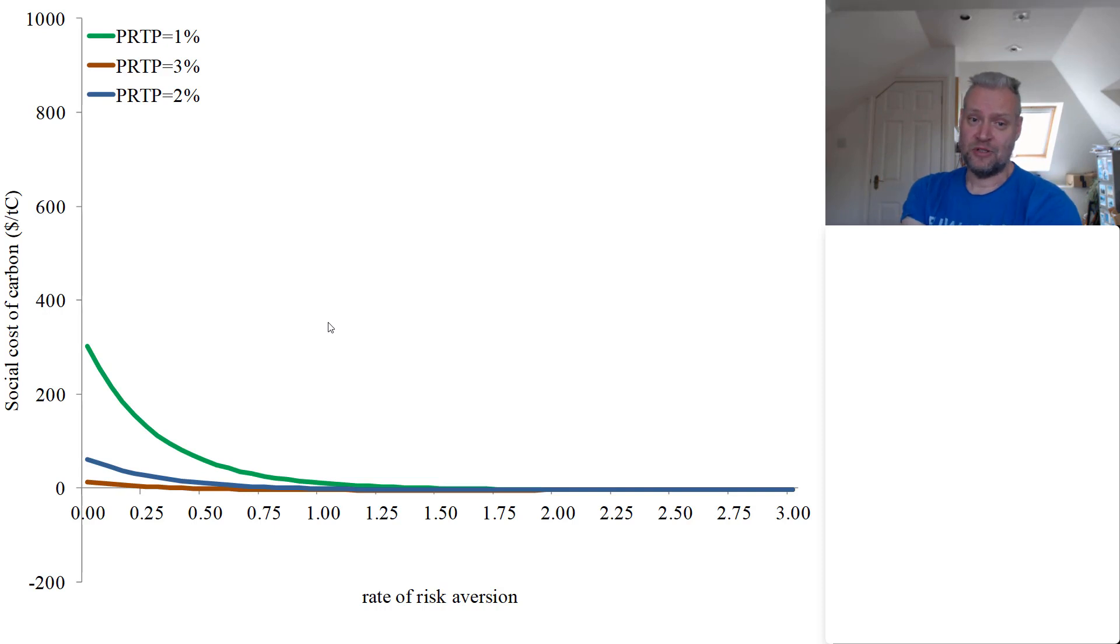Now, what do you see? The Ramsey rule is that the discount rate is ρ plus ηg. We assume a fixed rate of consumption growth, so g is the same in all scenarios that we're looking at here. The first thing that you see is that the green curve lies above the blue curve lies above the brown curve. And PRTP is the ρ that you're looking at, so it's the pure rate of time preference.